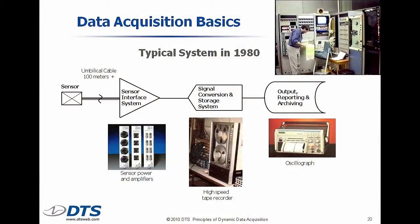So in the 1980s, the same block diagram could have been represented by a sensor, of course, but probably at the end of a long cable, then a bank of signal conditioners, and then something like a tape recorder, and then we might have had a pen plotter or an optical device — what we called an oscillograph, a light beam oscillograph — to actually put the data onto paper. There was no such thing as data processing in a PC in those days because PCs weren't around. If you did any data processing, it was at a computer at some large facility like Hughes or Rockwell.